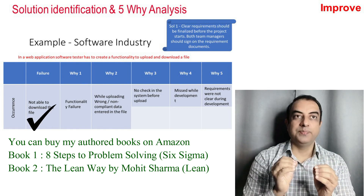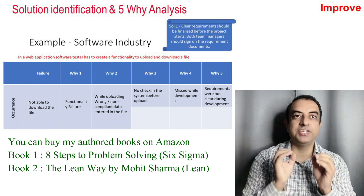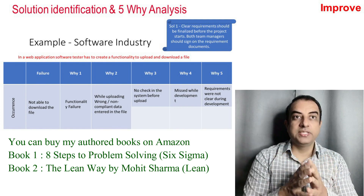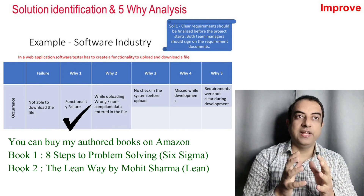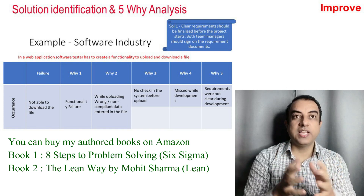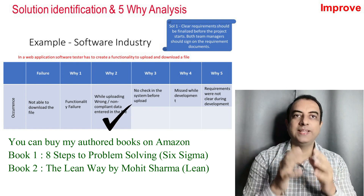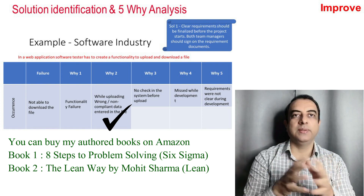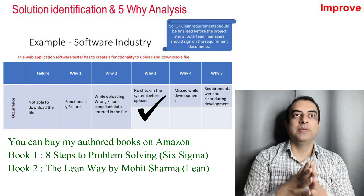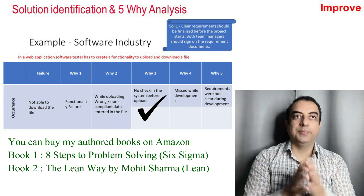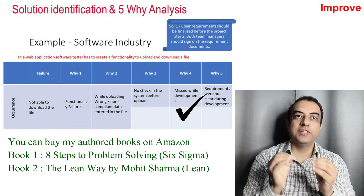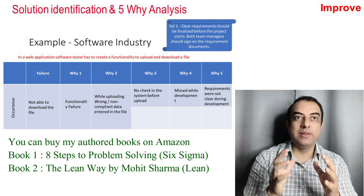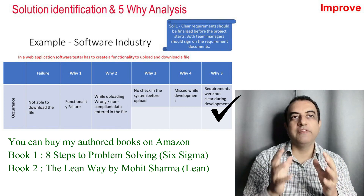The first Why asked is: why are you not able to download the file? The answer is functionality failure. Why is it a functionality failure? Because while the file upload was happening, wrong or non-competent data was entered into the file. Why did that happen? Because there is no check in the system before any upload happens. Why is there no check? Because this functionality was missed during development. Why was it missed during development? Because the requirements were not clear during development.